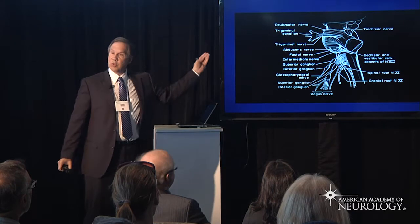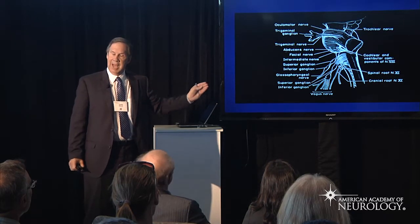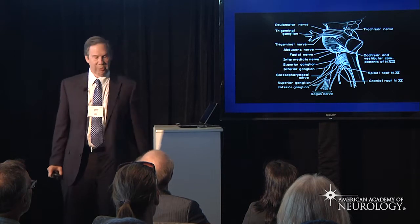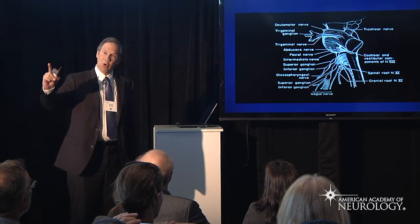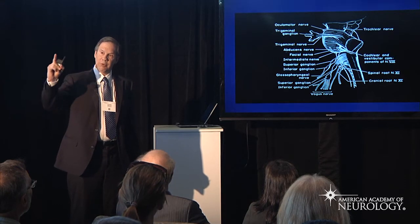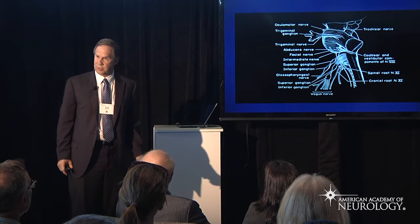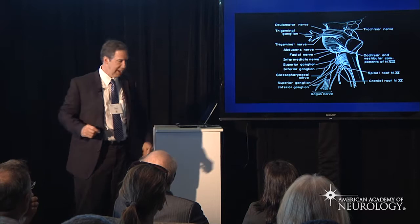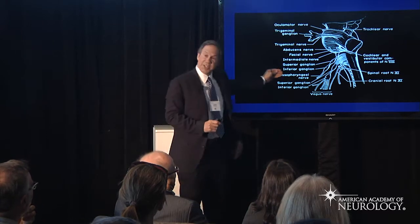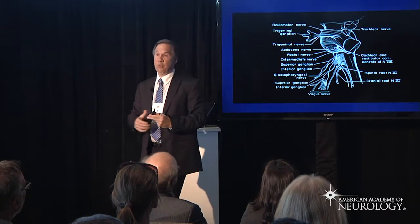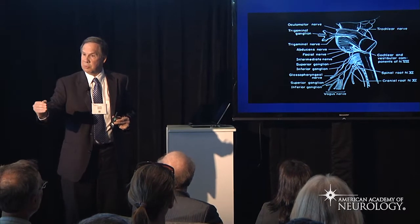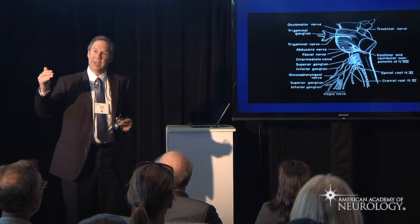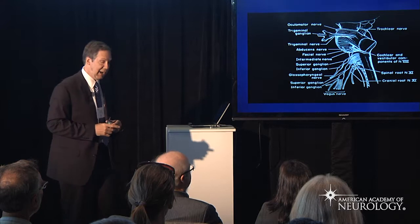Now we'll show the lateral view of the brainstem, and here we introduce the 4-4-4 rule of the brainstem. The first corollary states that there are 12 cranial nerves. The second corollary is that there are 4 cranial nerves that exit the medulla — you can count them off: 9, 10, 11, and 12. That helps in localization longitudinally.